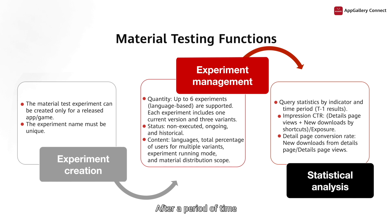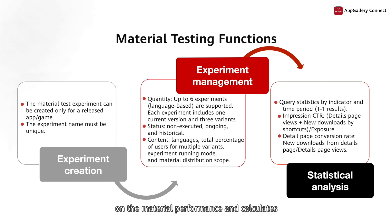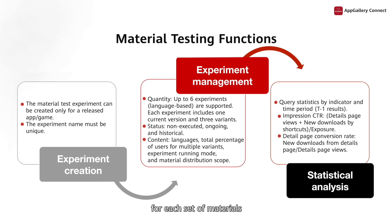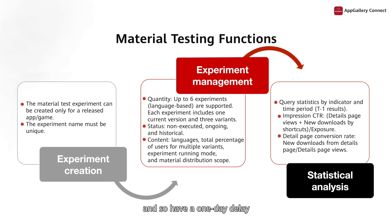After a period of time, AppGallery Connect collects statistics on the material performance and calculates their Impression CTR and Details Page CTR indicators for each set of materials. The two indicators are based on big data analytics and so have a one-day delay.